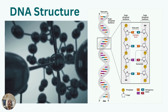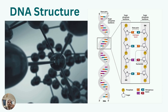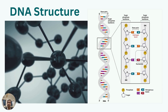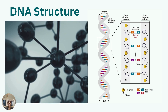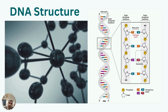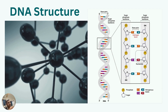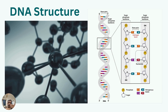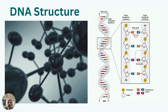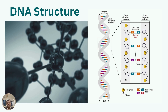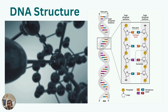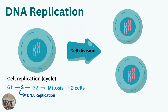Our DNA strands are anti-parallel. The two strands run in opposite directions: one runs from five prime to three prime, and the second strand runs from three prime to five prime. These are the key points regarding the structure of our DNA. Now let's look at the DNA replication process.